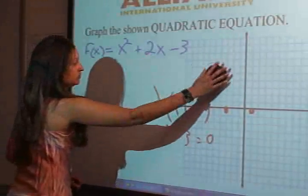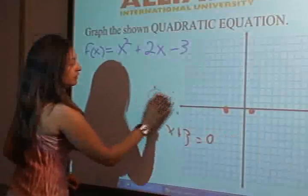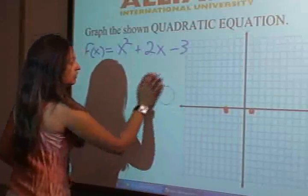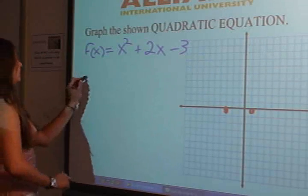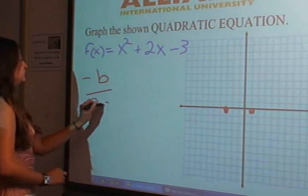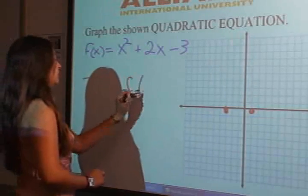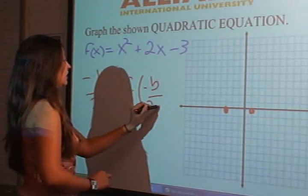Now we're going to find our vertex, which is going to be the lowest point of the parabola. And we're going to do that by using negative b over 2a, comma, the function of negative b over 2a.